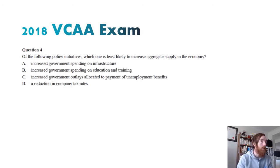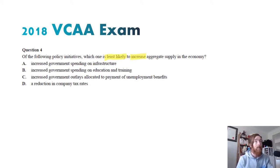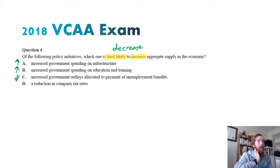Question four — which of the following policy initiatives is LEAST likely to increase aggregate supply? Increased government spending on infrastructure would increase aggregate supply. Government spending on education and training would also increase aggregate supply. Increasing government outlays for unemployment benefits — people wouldn't want to work, so that would decrease productive capacity and decrease aggregate supply. Reducing company tax rates leads to businesses having lower costs of production, increasing aggregate supply. So the answer is C — increasing government outlays for unemployment benefits.